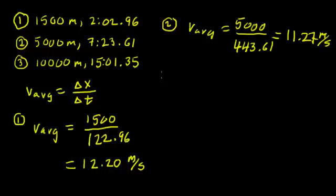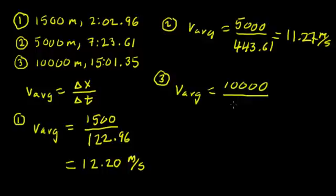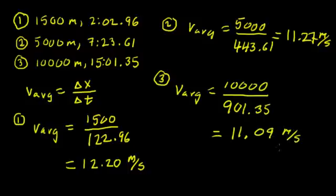And then finally, number three, the last race, the longest one. Again, average velocity is the change in position, which is 10,000 meters this time, over the change in time. So now we have 15 minutes 1.35 seconds; that's going to turn out to be 901.35 seconds, and so that average speed is going to come out to be 11.09 meters per second.